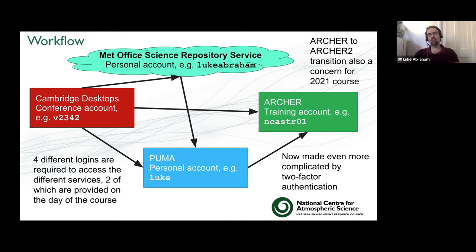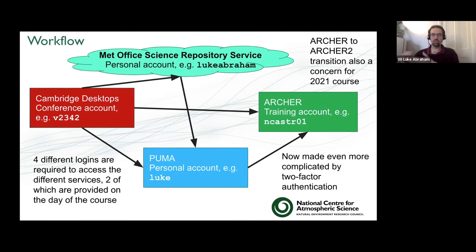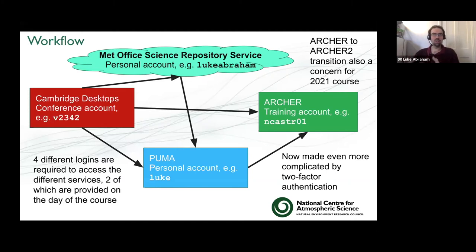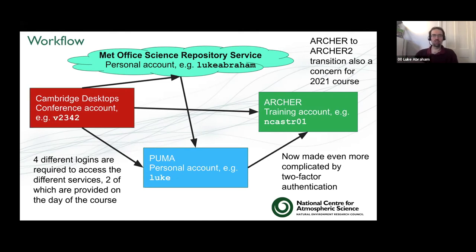For the 2021 course, there were concerns about the pandemic, but also the Archer to Archer 2 transition — Archer being turned off, Archer 2 turned on, and uncertainty about exactly when that would happen or whether the system would be available. There was also a security breach that brought in two-factor authentication, making things even more complicated. I decided this wasn't a suitable system for training anymore — we were doing too much work just getting onto Archer on top of everything else.